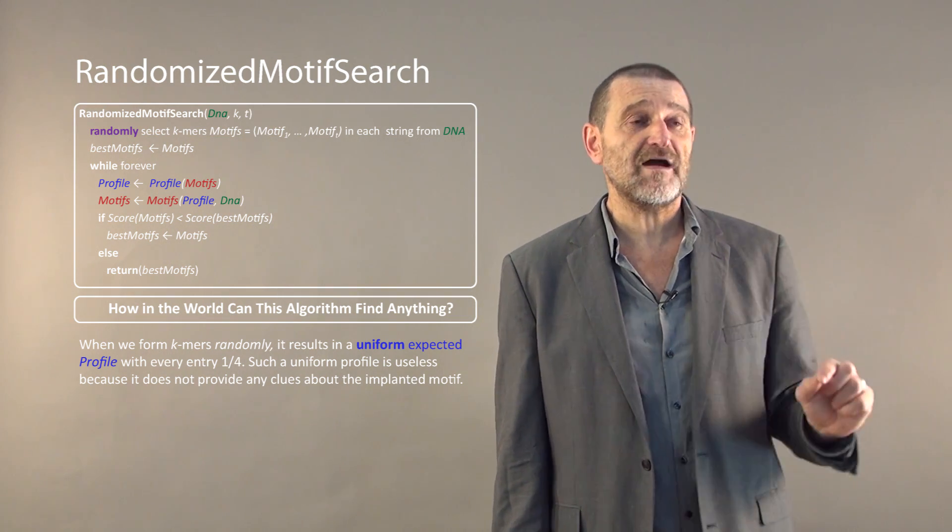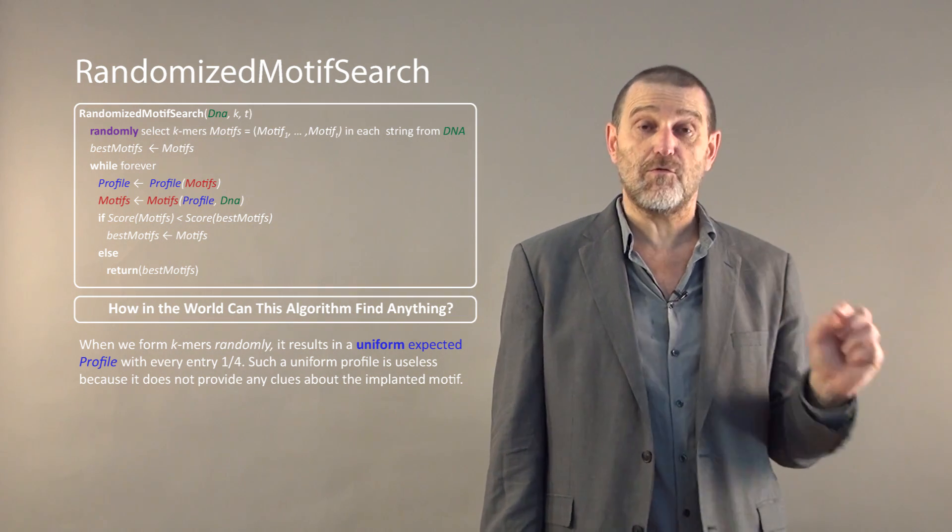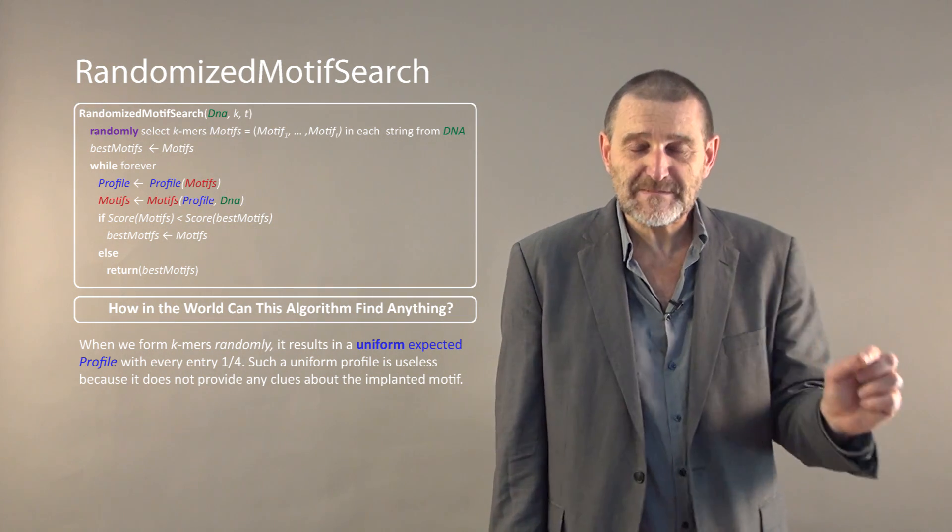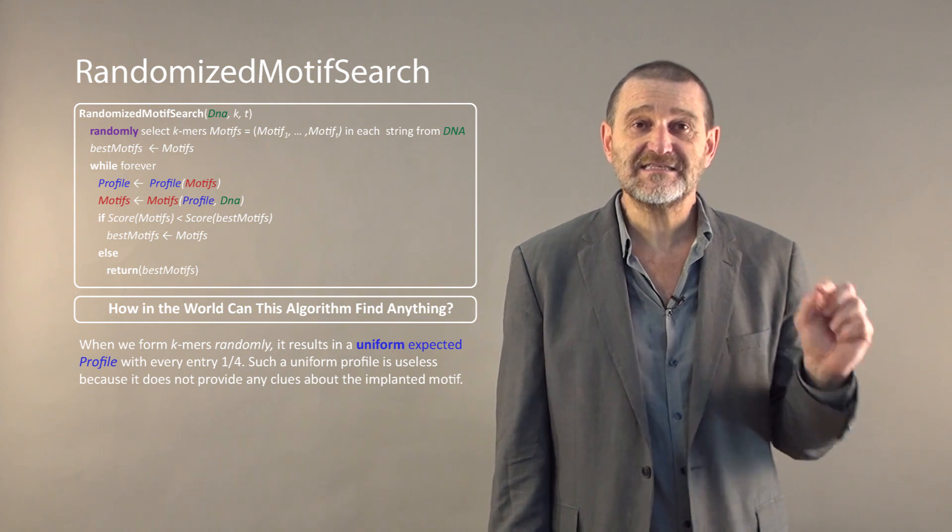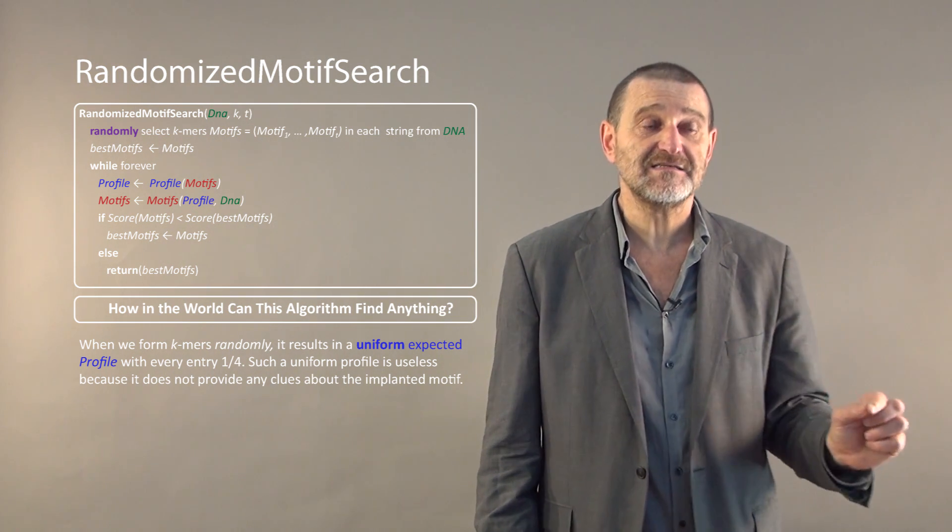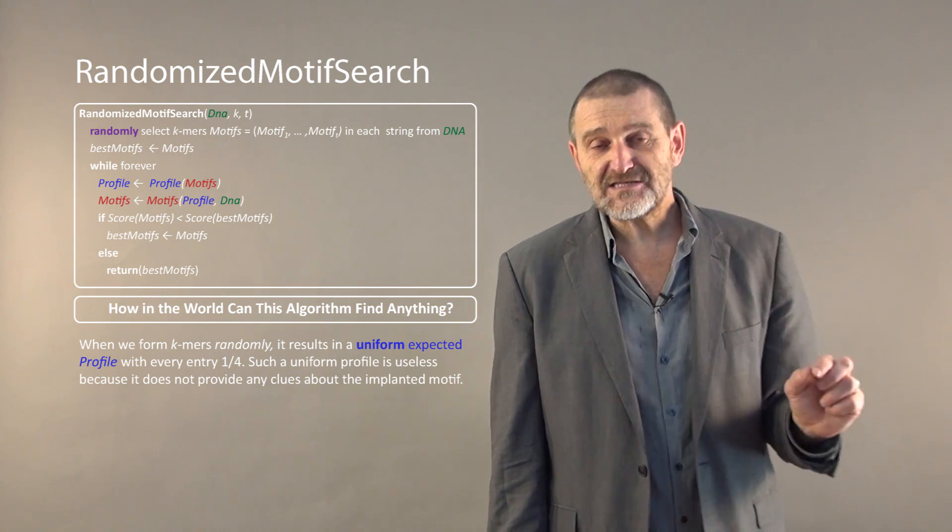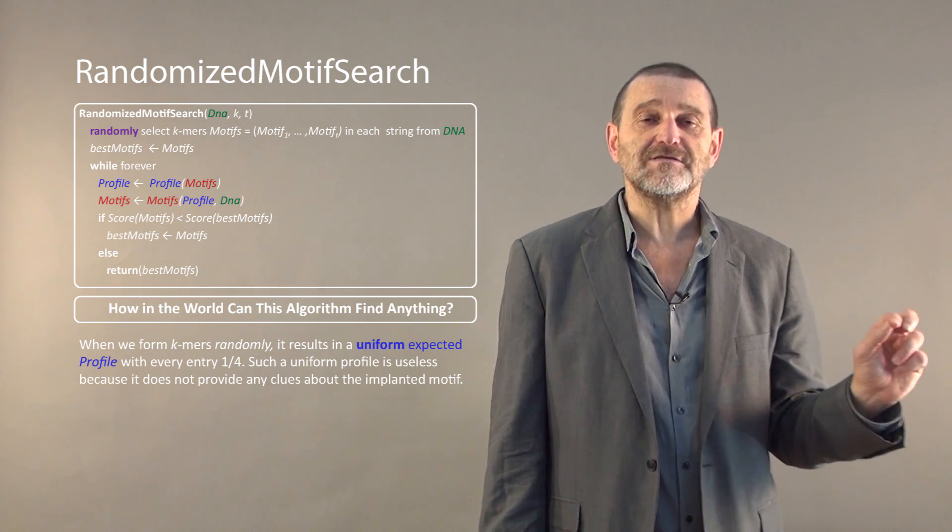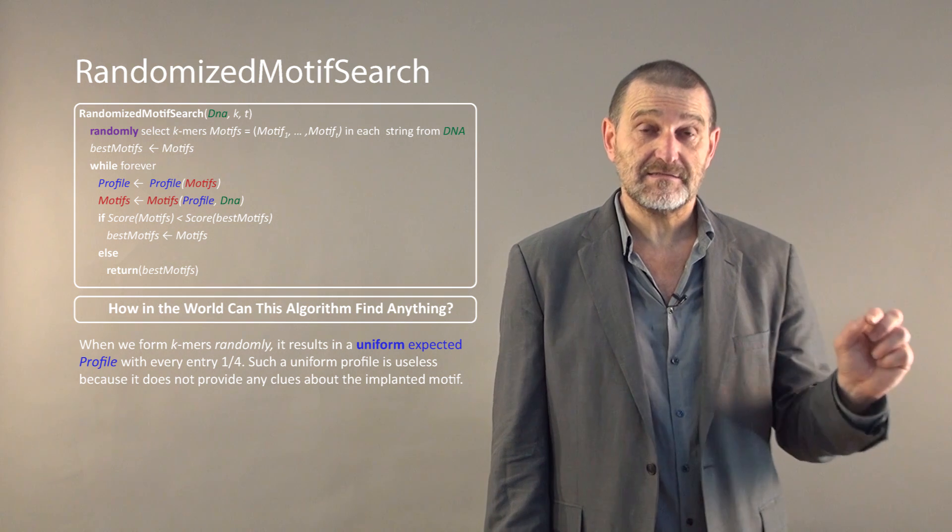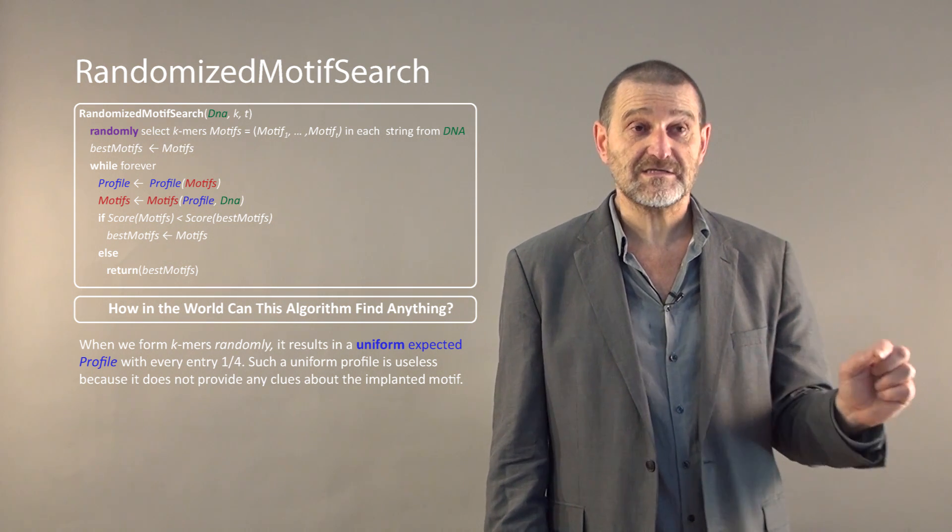If they are completely random, and taken from random sequences, then presumably the expected probability of every element in the profile matrix is 1 over 4. There is absolutely no information in such a motif. How possibly can it lead us to the correct motif in the sequence?